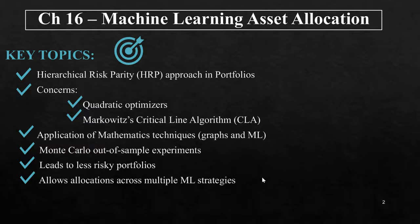HRP portfolios address three major concerns of quadratic optimizers in general and Markowitz's critical line algorithm in particular, which are instability, concentration, and underperformance. HRP applies modern mathematics, graph theory, and machine learning techniques to build a diversified portfolio based on the information contained in the covariance matrix. However, unlike quadratic optimizers, HRP does not require the invertibility of the covariance matrix.